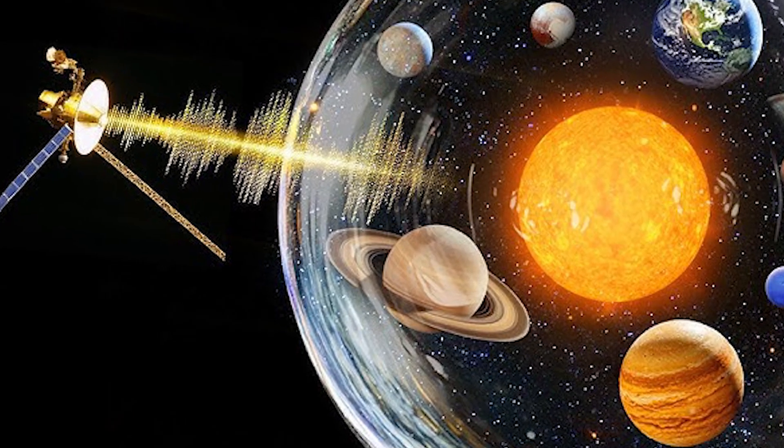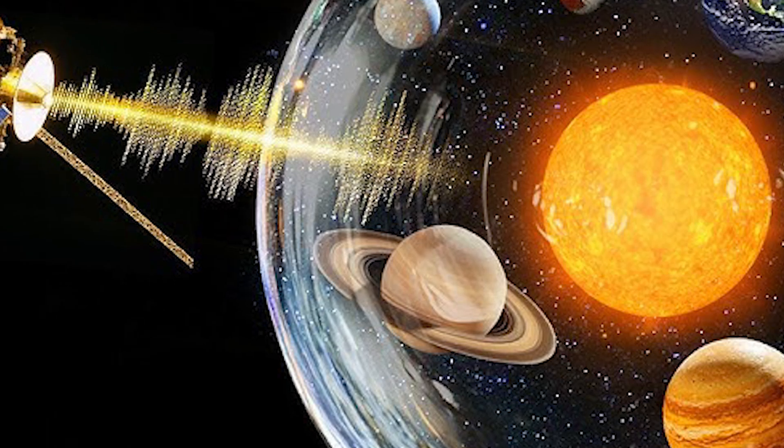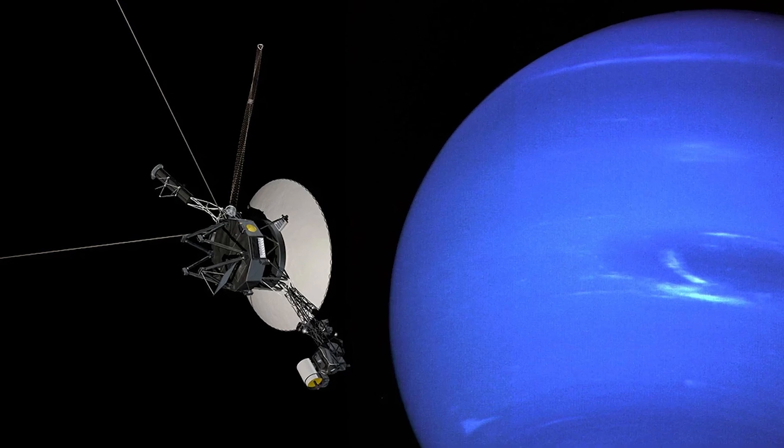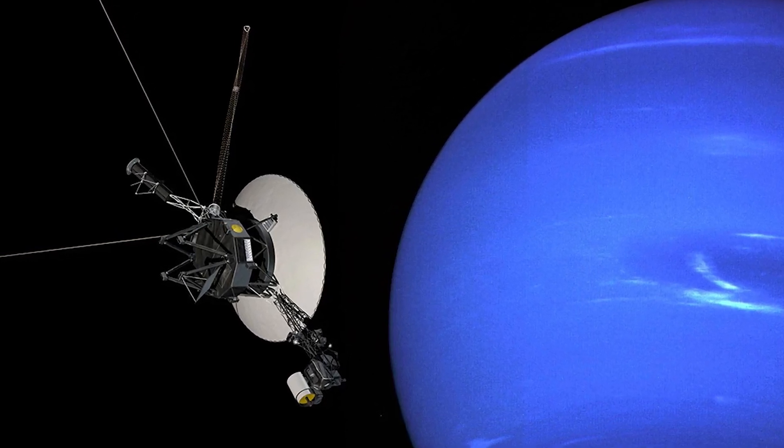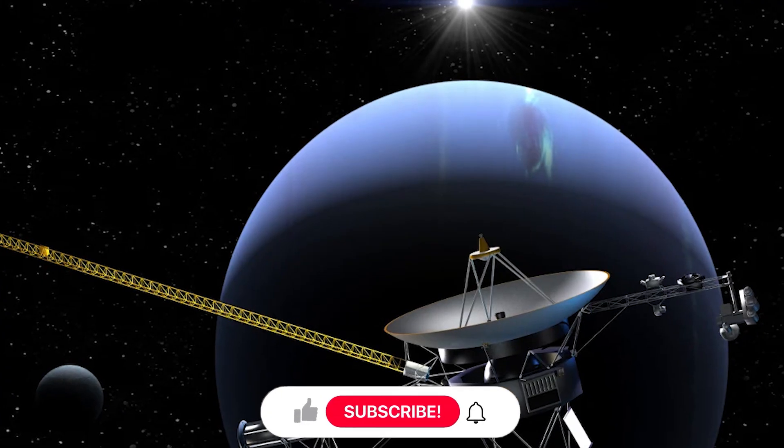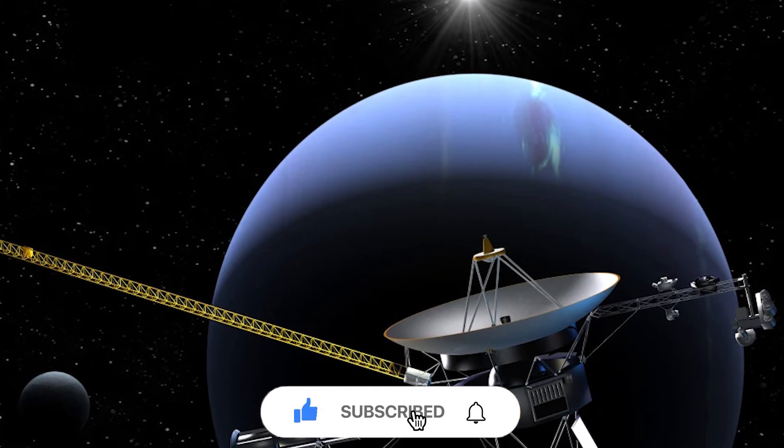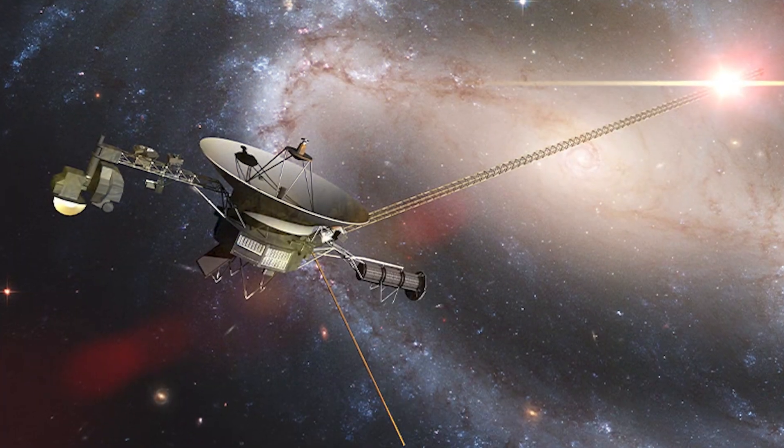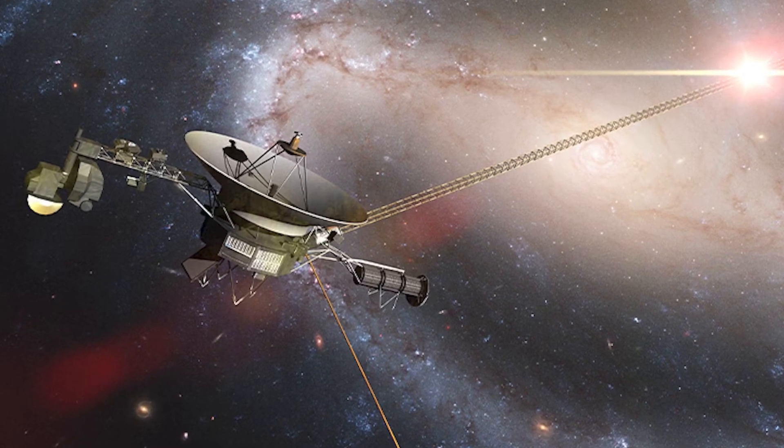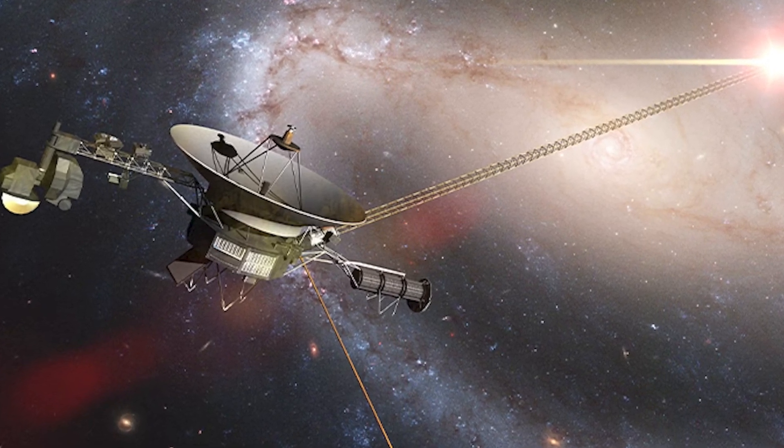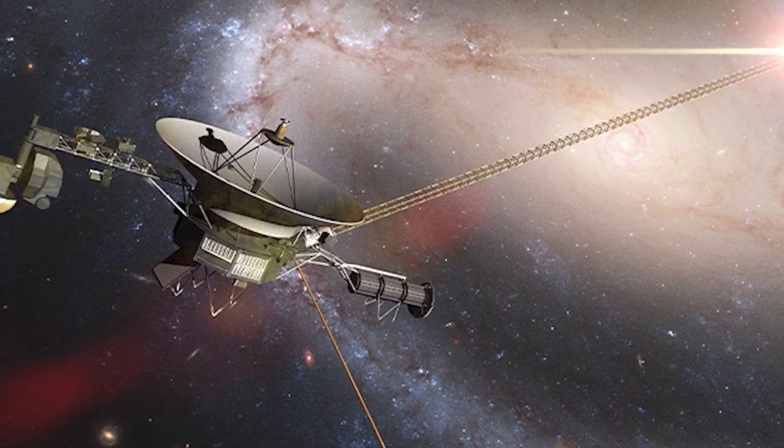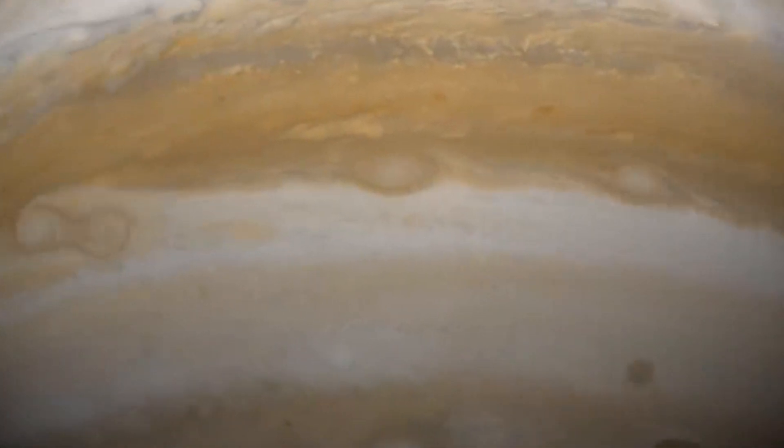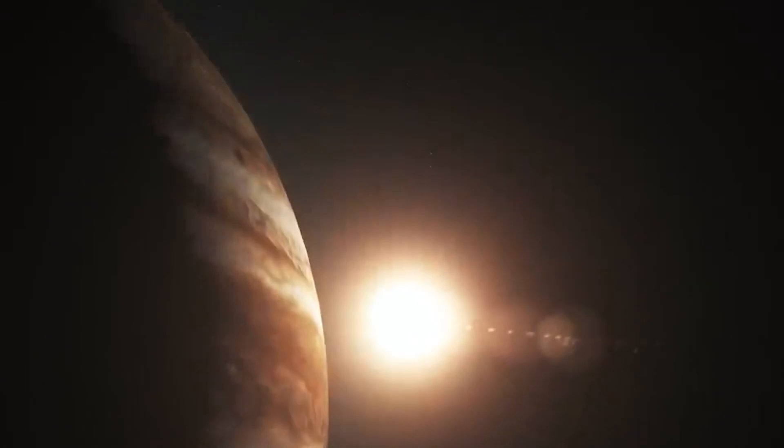NASA's Voyager 1 spacecraft, which exited the asteroid belt before Voyager 2 on December 15, 1977, was launched after the latter. It began its Jovian imaging mission in April 1978, when it was around 165 million miles, 265 million kilometers, away from the planet. Images captured by January 1979 showed Jupiter's atmosphere to be more turbulent than it had been during the Pioneer flybys in 1973 to 1974.